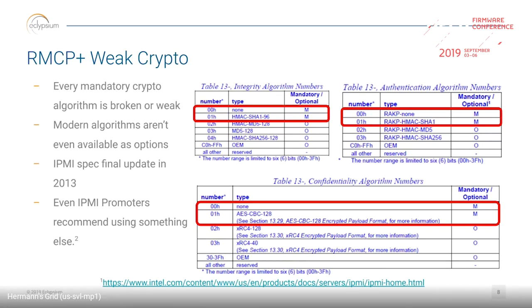At this point, the IPMI promoters recommend you not actually rely on this specification anymore — they're not planning any new updates. One thing to note: in most of these encryption schemes, mandatory type 0 is 'none,' which ends up being a nice hole, as that was interpreted to mean I don't actually have to authenticate at all on many BMC implementations. You can simply connect with authentication type 0 and it won't ask you for any credentials.